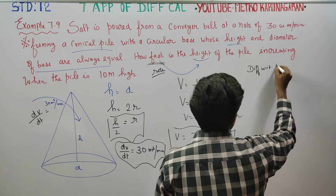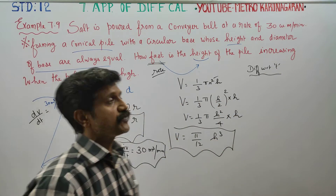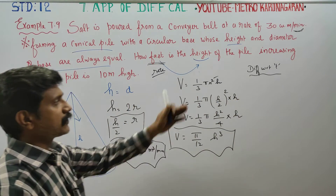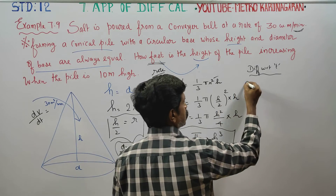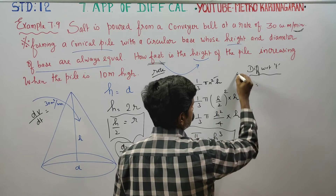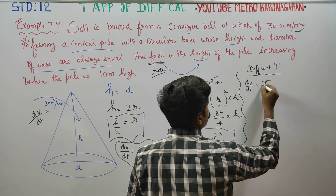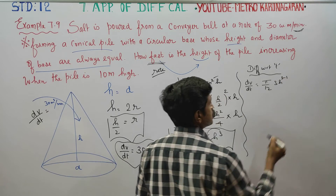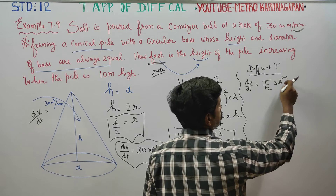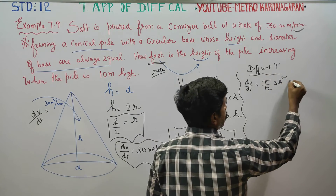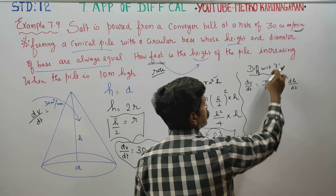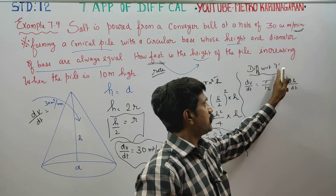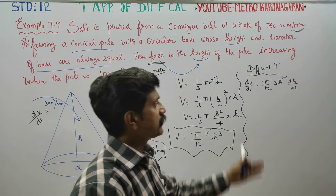Differentiating V = π h³/12 with respect to t gives dV/dt = (π/12) · 3h² · (dh/dt). Since we are differentiating with respect to t, dh/dt appears because h is a variable — this is an implicit function differentiation.